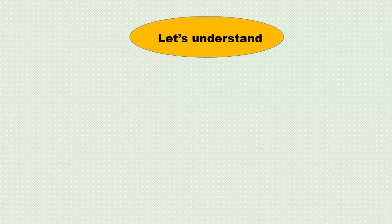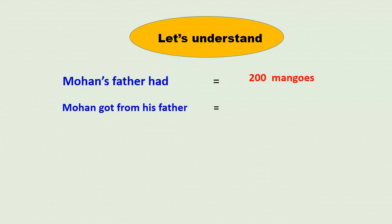To solve this, let's understand. Mohan's father had 200 mangoes. Mohan got from his father 200 divided by 2 equals 100 mangoes.